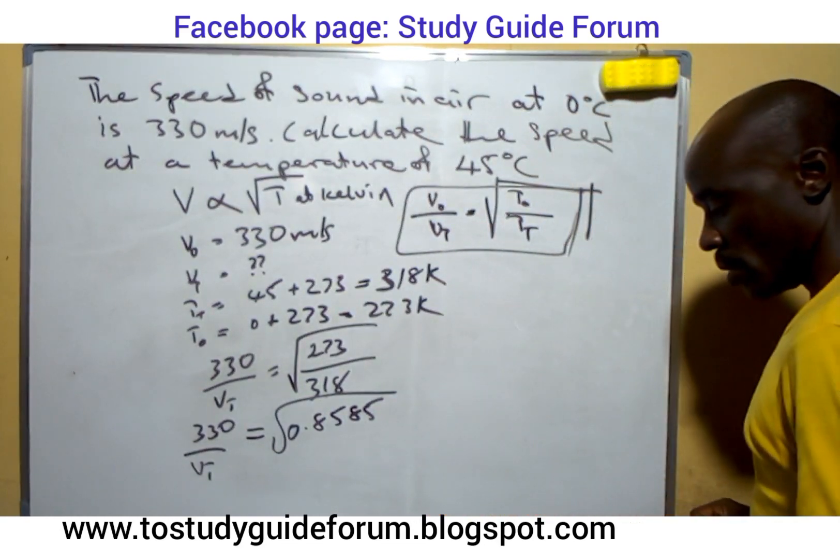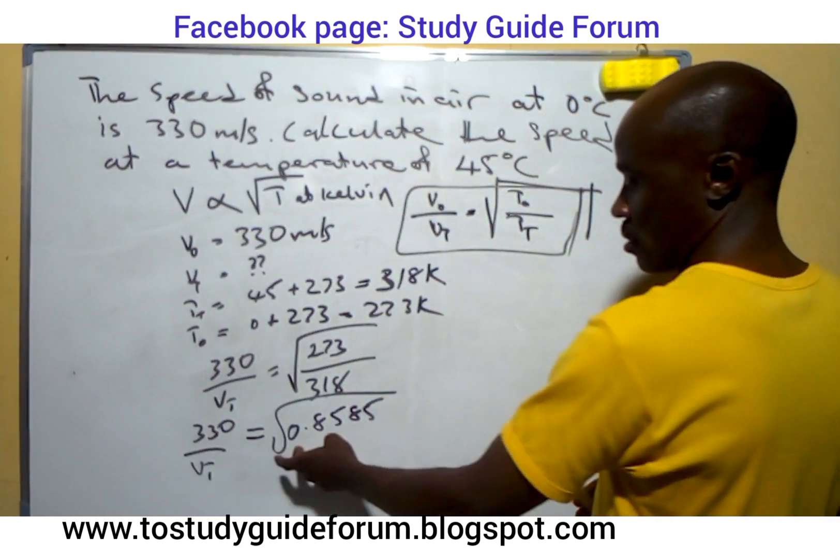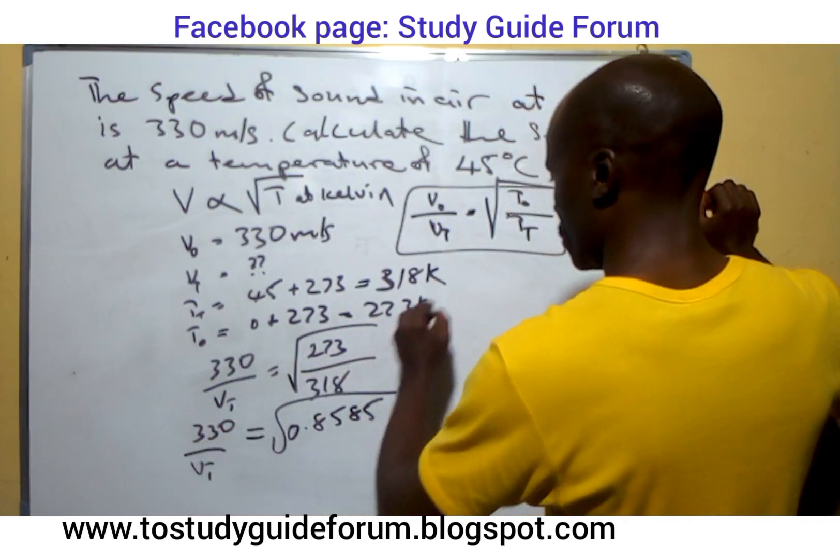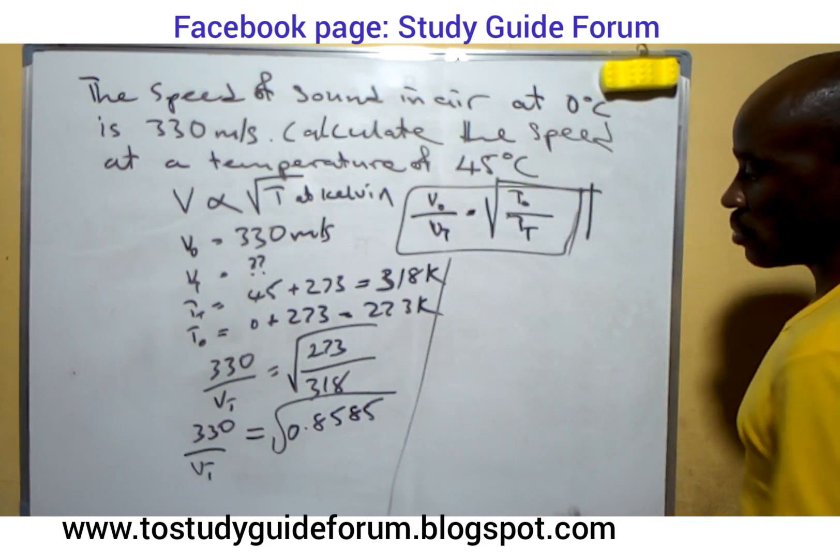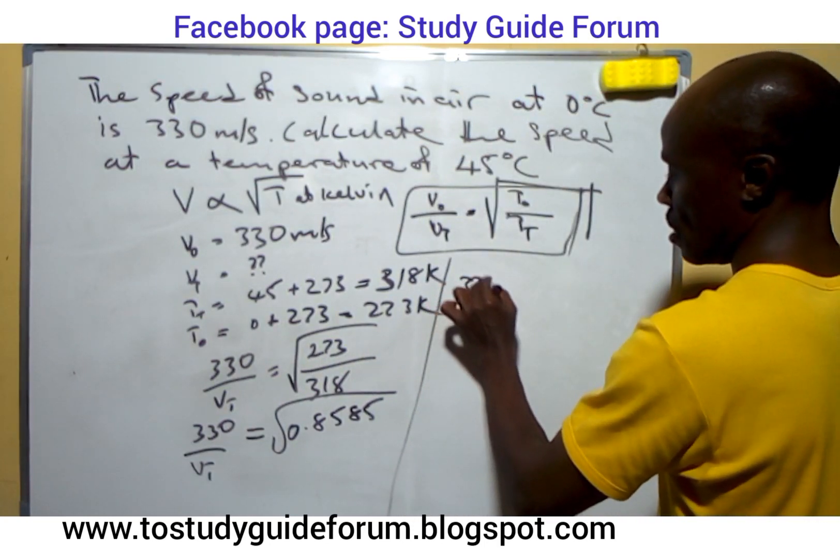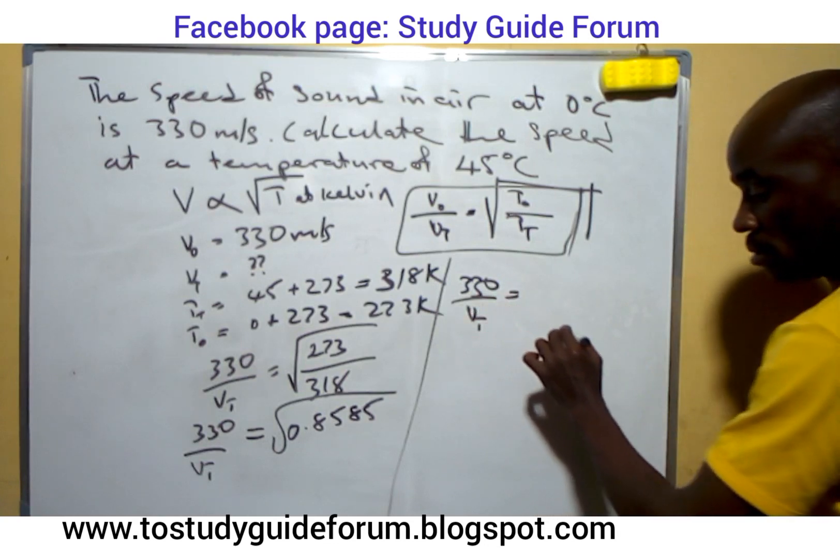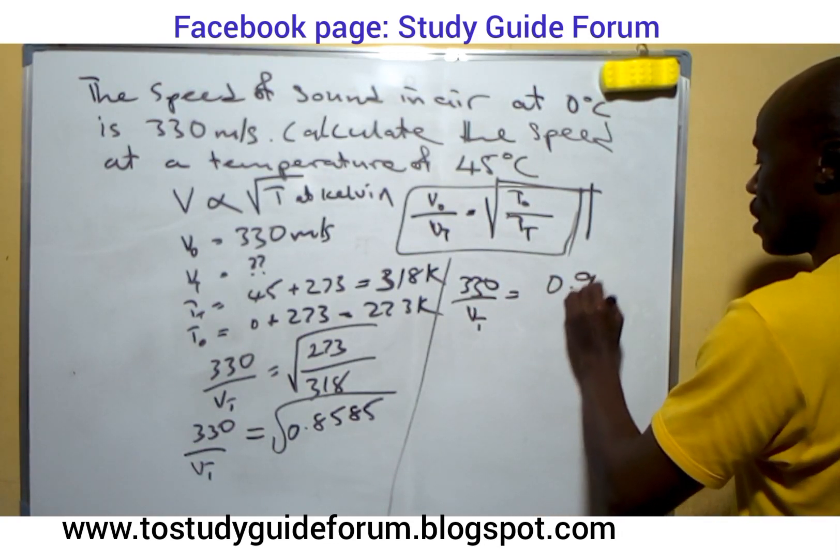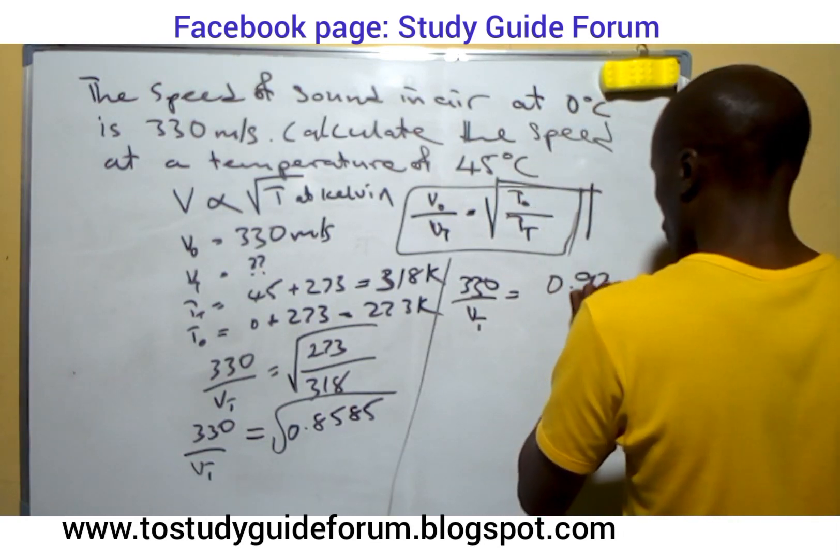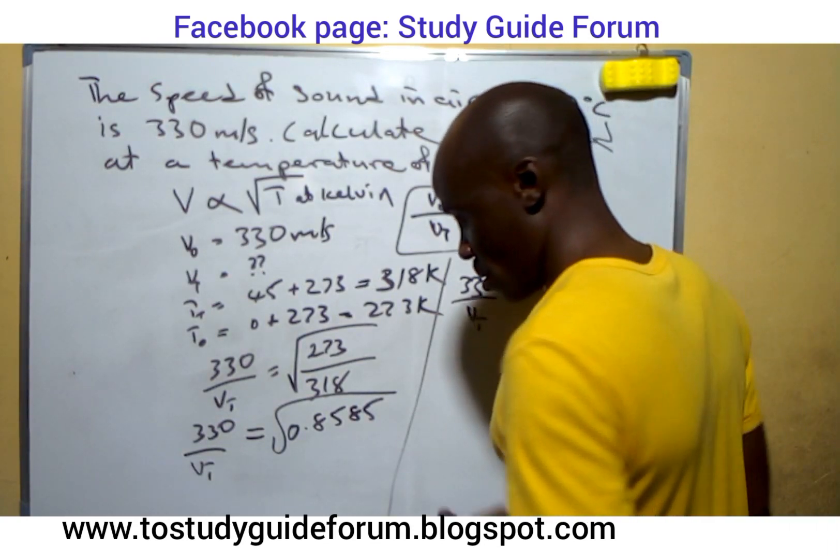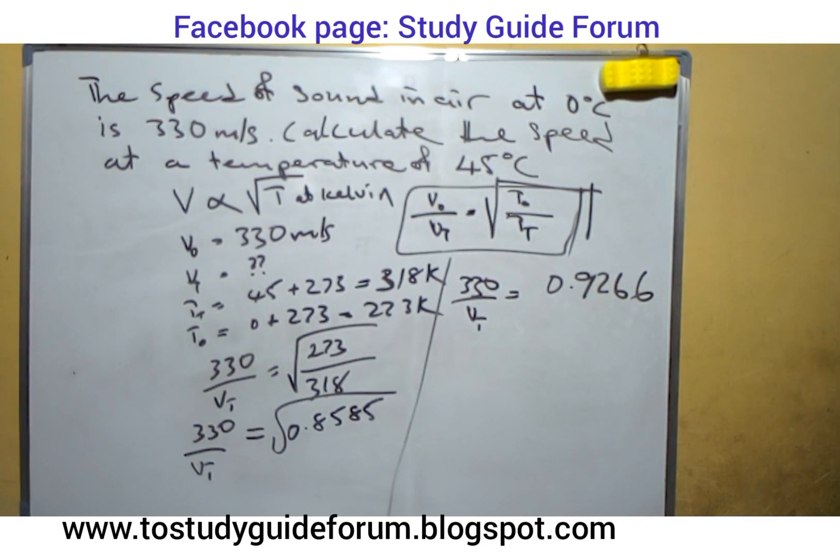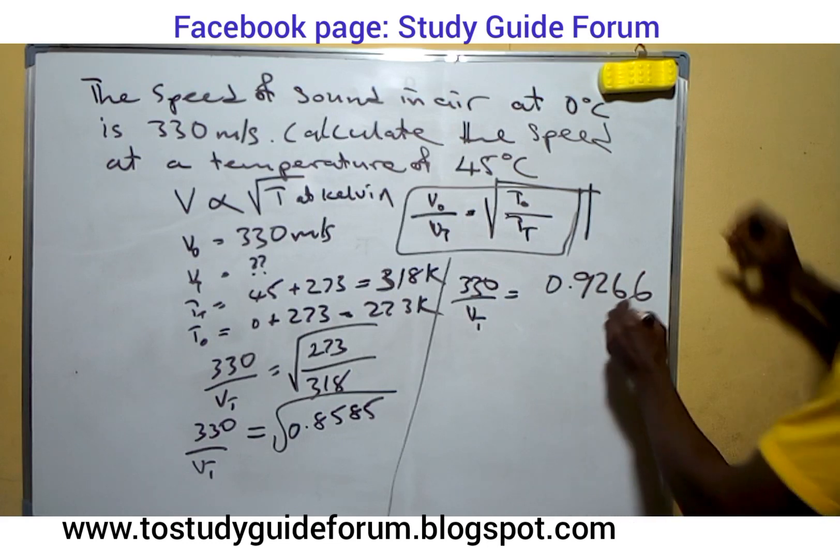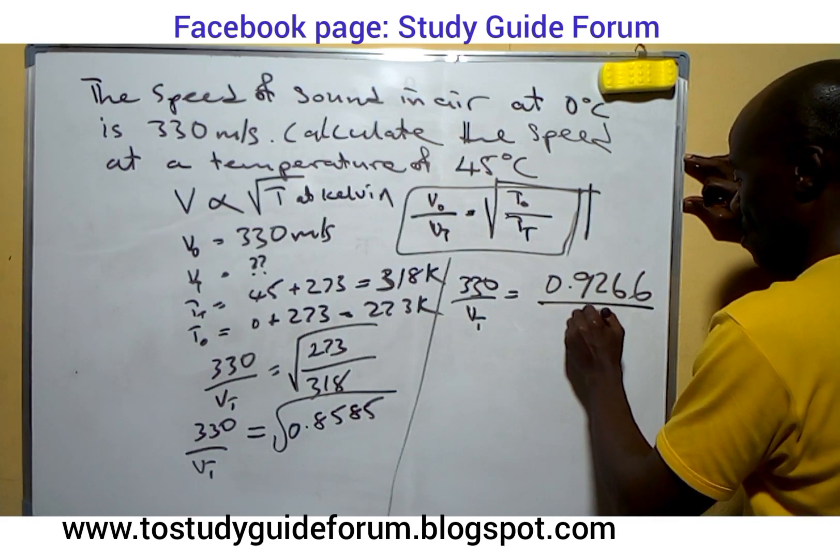Getting the square root of that, the square root of 0.8585 will give us 330 over Vt equal to 0.9266.